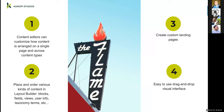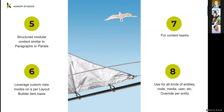Content editors can customize how content is arranged on a single page or across content types. You can place and order various kinds of content: Layout Builder blocks, fields, views, user info, taxonomy terms, and more. It's great for creating custom landing pages. It's an easy-to-use drag and drop visual interface with structured modular content, similar to paragraphs and panels, but you get an extra added visual preview in the Layout Builder UI.